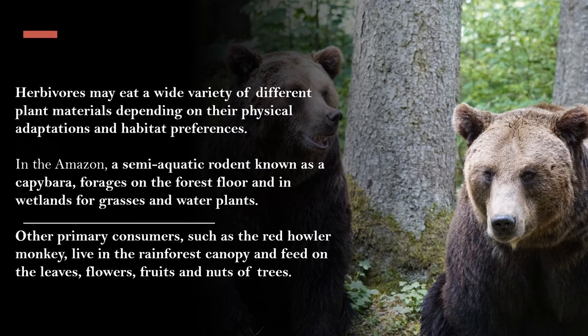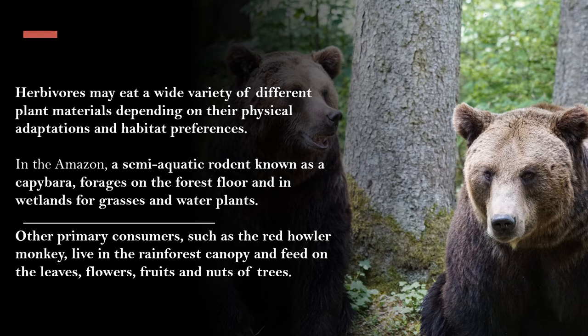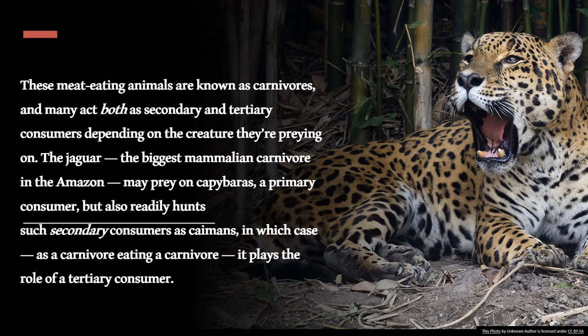Herbivores are the first ones to feed upon the producers. The energy level decreases as we move up the system toward the carnivores. The energy first entrapped by the plants is then taken by the herbivores. They feed on all types of green plants and depend on plants for their survival. Herbivores may eat a wide variety of plant material depending on their physical adaptations and habitat preferences. In the Amazon, a semi-aquatic rodent known as the capybara forages on the forest floor and in wetlands for grasses and water plants. Other primary consumers, such as the red howler monkey, live in the rainforest canopy and feed on leaves, flowers, fruits, and nuts.